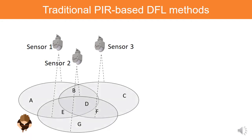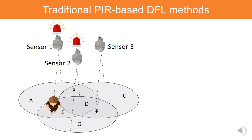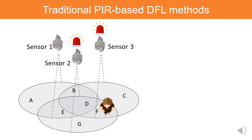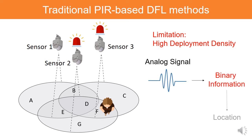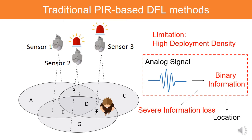The basic idea of traditional PIR-based localization is relatively simple. They deploy abundant PIR sensors in an environment where detection zones are partially overlapped. When a person moves into different areas, different PIR sensors are triggered—for example, sensor 1 and 2 trigger in area E, all three sensors trigger in area D, and sensor 2 and 3 trigger in area F. However, to achieve high localization accuracy, traditional methods have a limitation of high deployment density, because they convert the PIR sensor's analog signal to binary information, causing severe information loss.